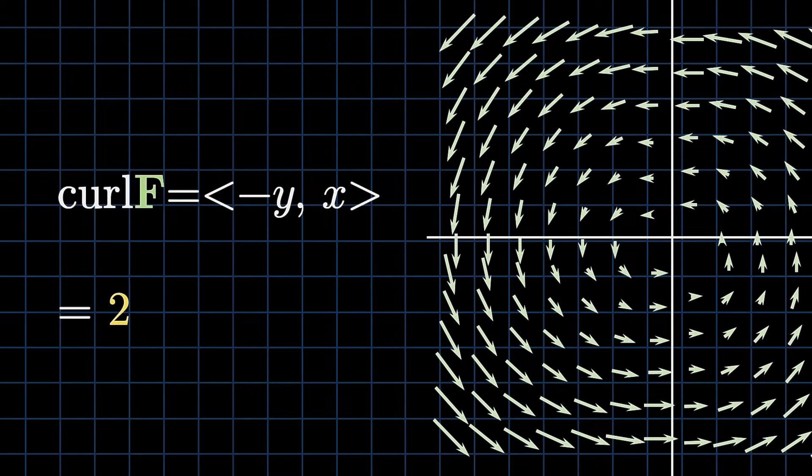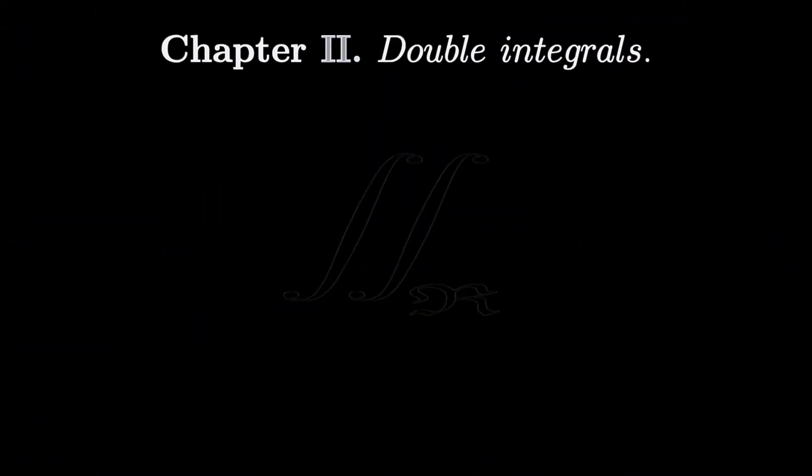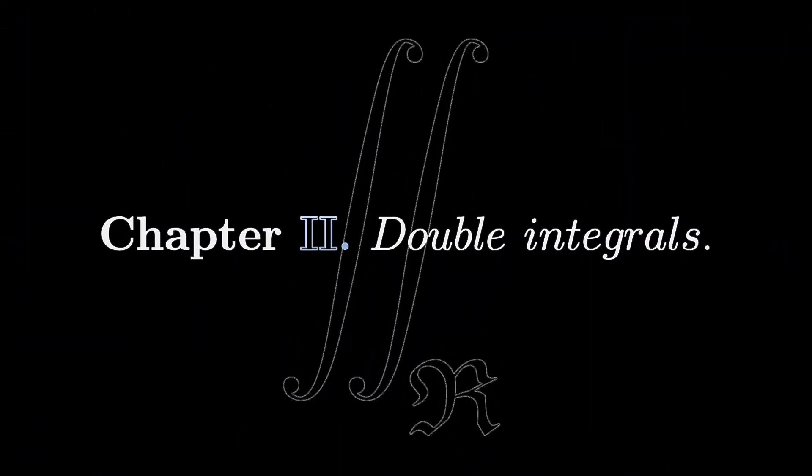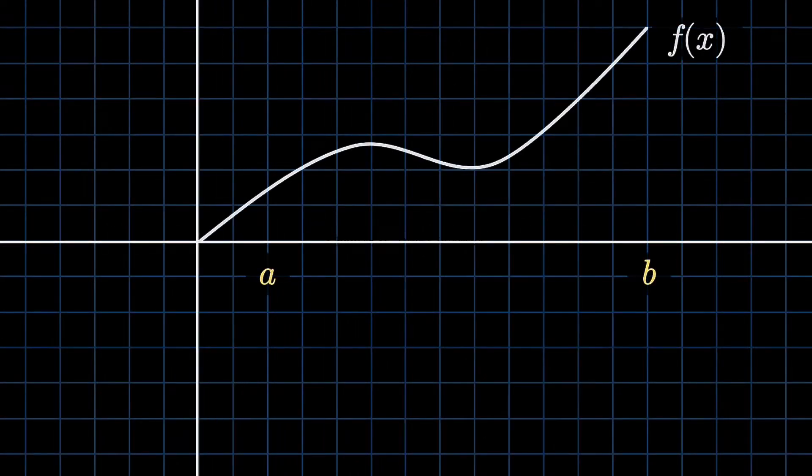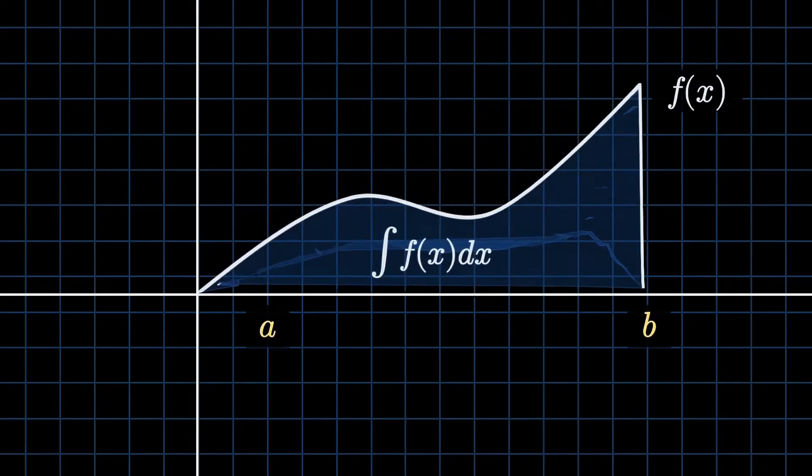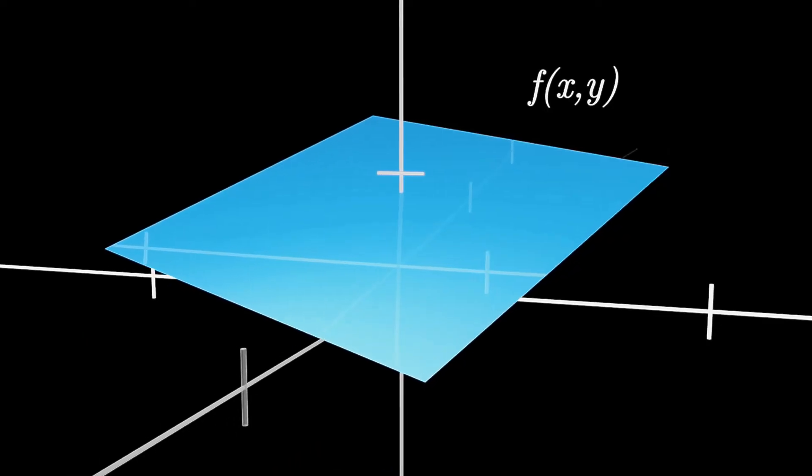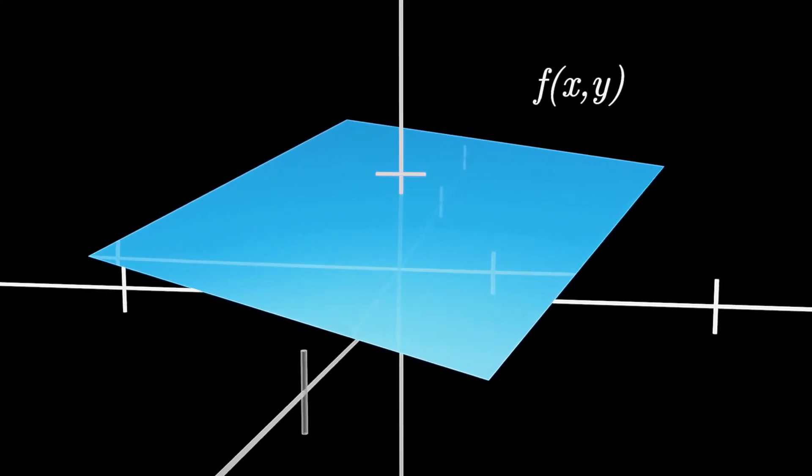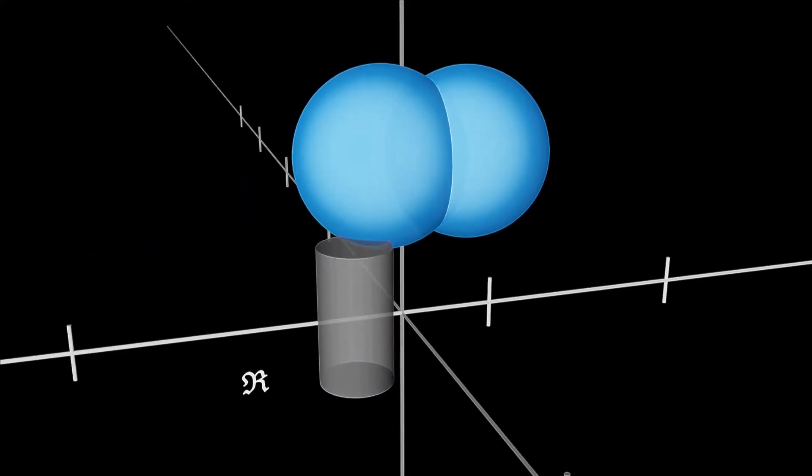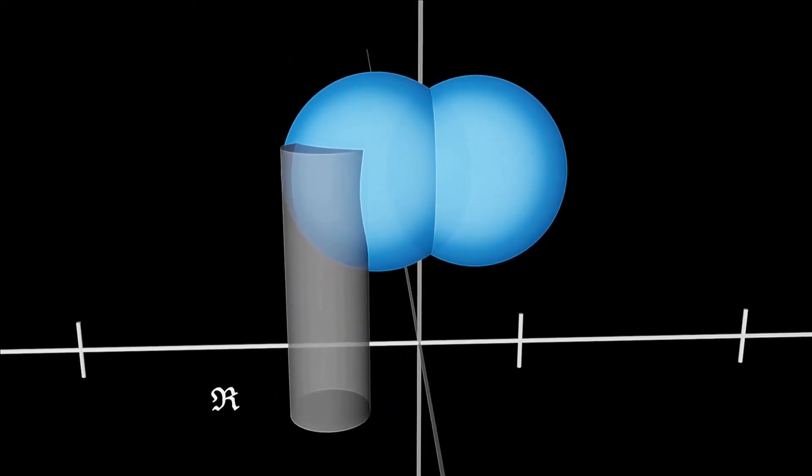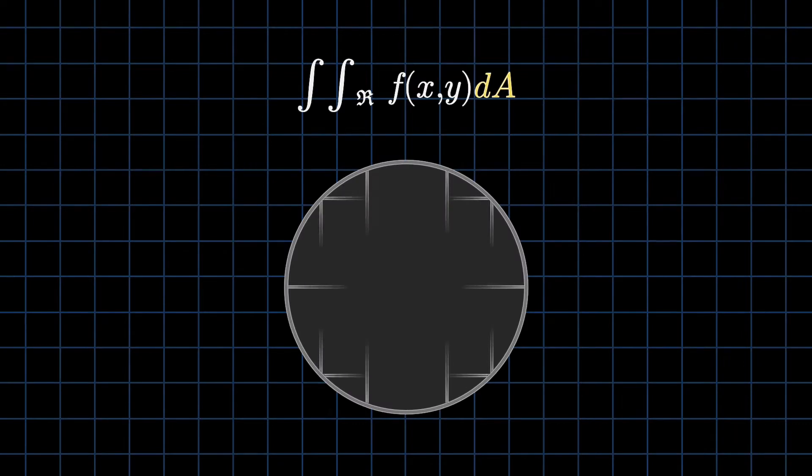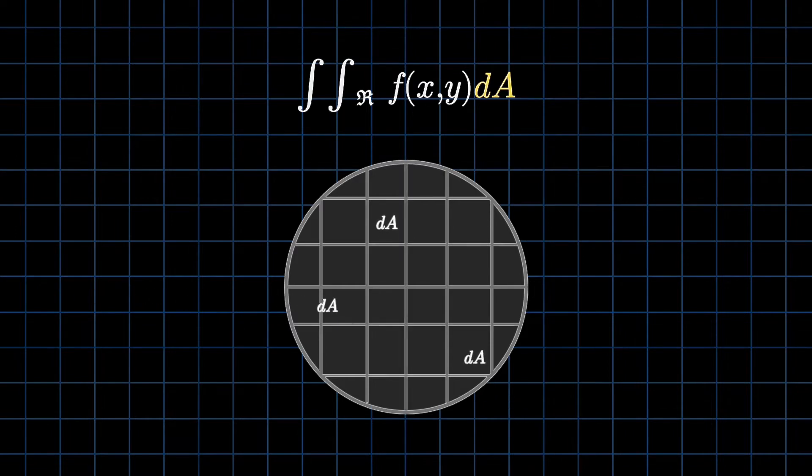A standard integral measures the area under a graph between some a and b. A double integral will find the area of a surface. So let us say we have a function f(x, y) with two variables x and y. We pick a region in the space as R, and we will try to find the volume of the intersection. So we denote this as the double integral over the region R of f(x, y) dA, where dA is the piece of area.